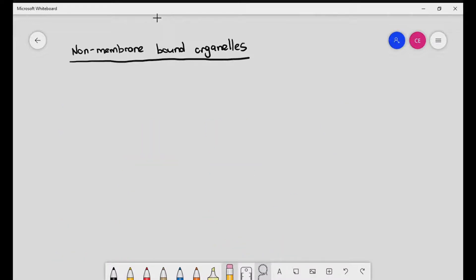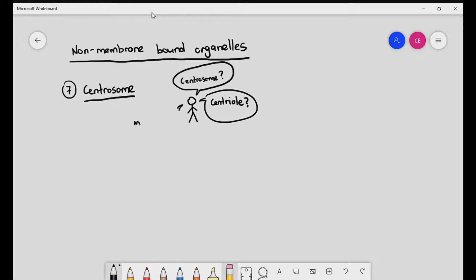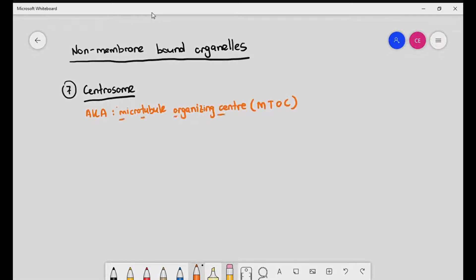The next organelle we are talking about is the centrosome. A lot of times, students get confused with this because when you talk about centrosomes, many different things come together. Sometimes you might see the word centriole, sometimes microtubules, and it's always used interchangeably in the book, which makes students extremely confused. The centrosome itself is basically known as the MTOC, also referred to as the microtubule organizing center.